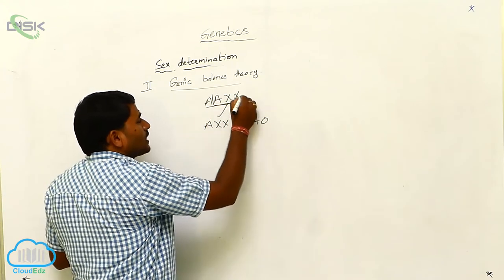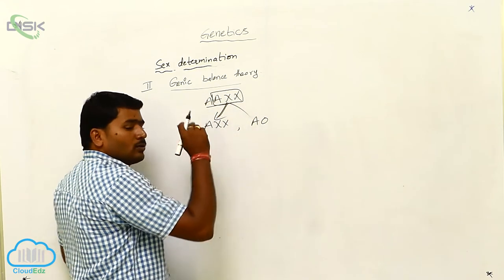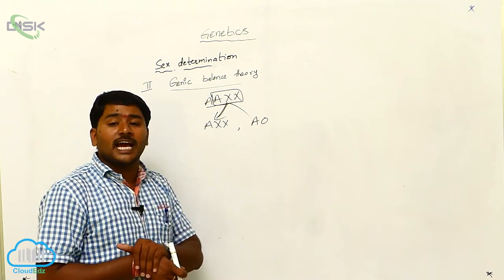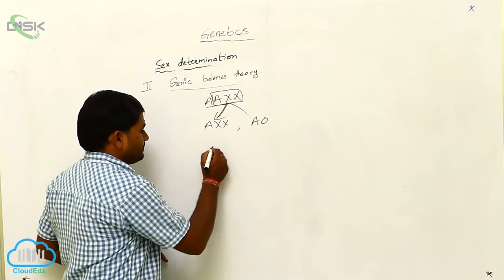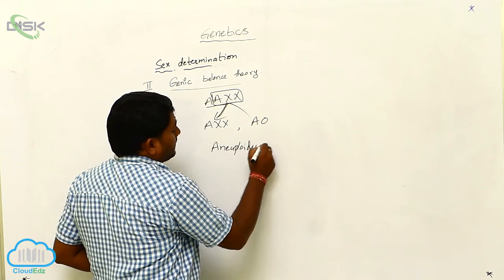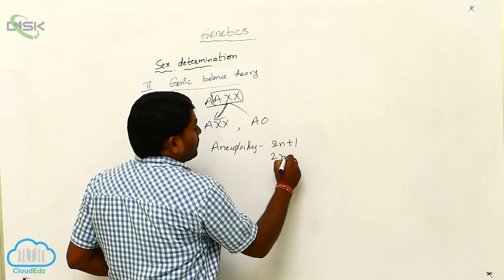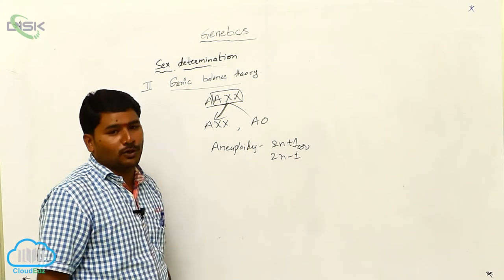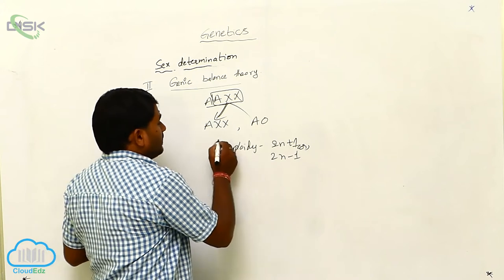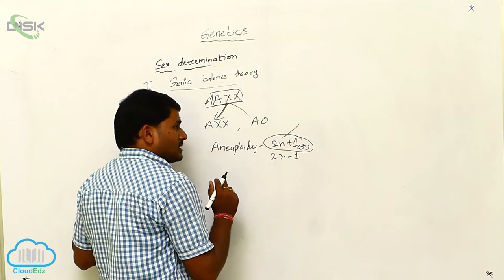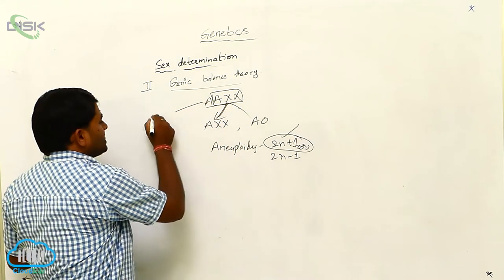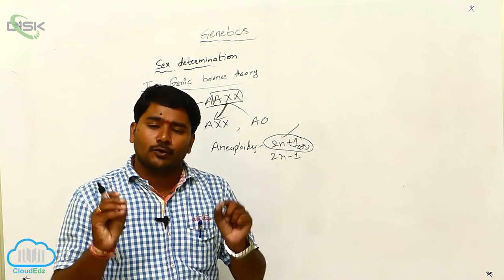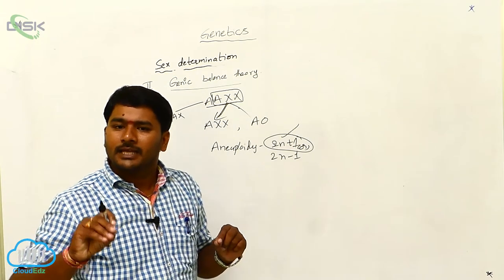So what happens? The chromosomes are not separated and they go together. If an individual has more than its natural chromosome set, that is called aneuploidy — that is 2N+1 or 2N-1. This is caused due to non-disjunction. The actual disjunction gives AX and AX, but non-disjunction means there is no proper separation of chromosomes during gametogenesis.